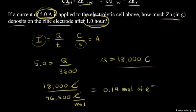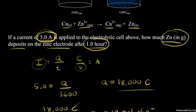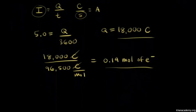So 0.19 moles of electrons were forced through our electrolytic cell because of the battery. Next we need to relate the moles of electrons to the moles of zinc that are formed. We can do that by remembering our reduction half reaction. Zinc two plus plus two electrons forms solid zinc. So let's write down our reduction half reaction. We know that zinc two plus ions are being reduced to form solid zinc.